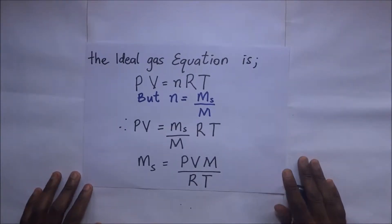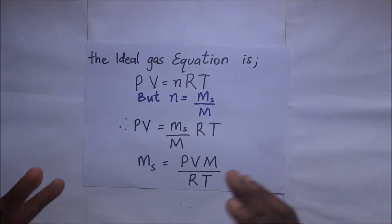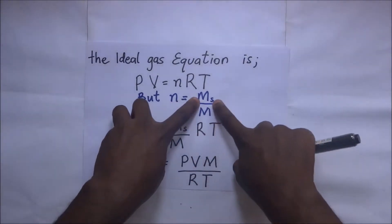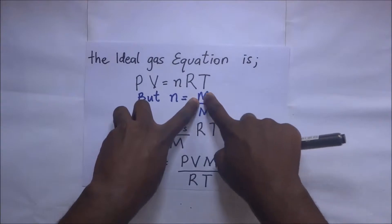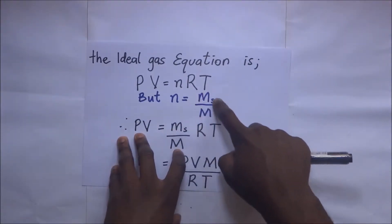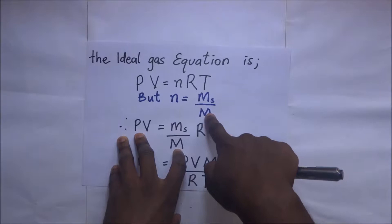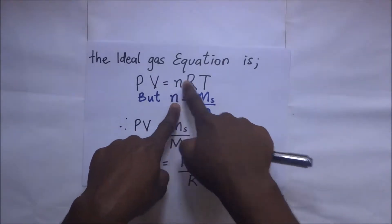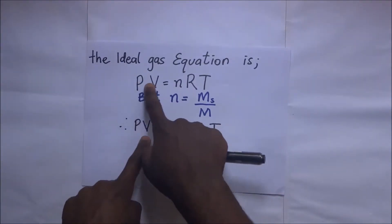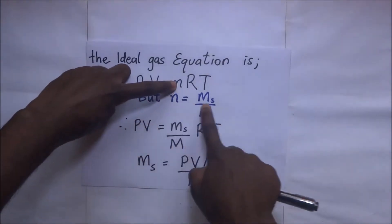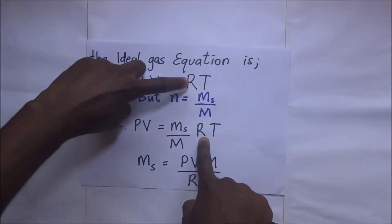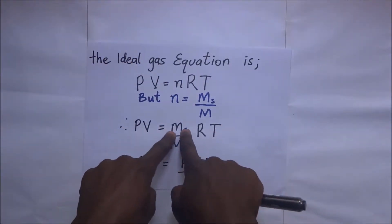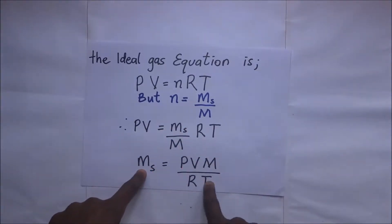We want to use this to get an expression for the mass of the gas. We know that n is given by the mass of the substance — denoted m_s — divided by the relative molecular mass M of that gas. Substituting for n, PV becomes equal to (m_s / M) × R × T, and making m_s the subject gives us m_s = PVM / RT.